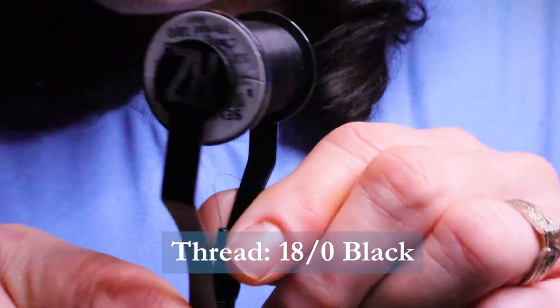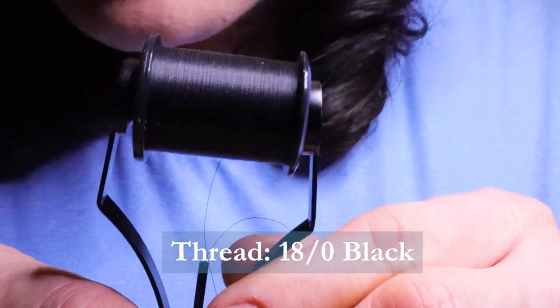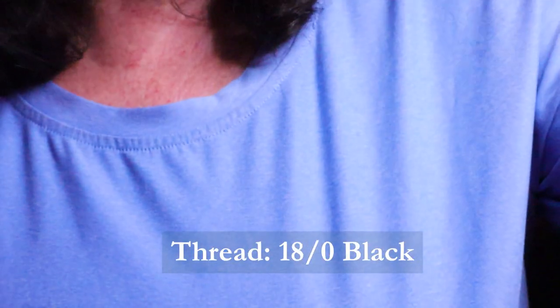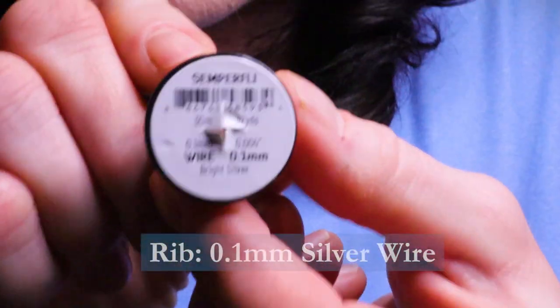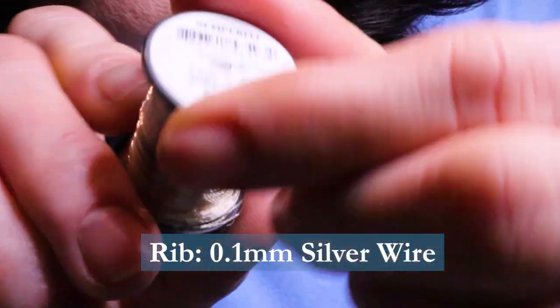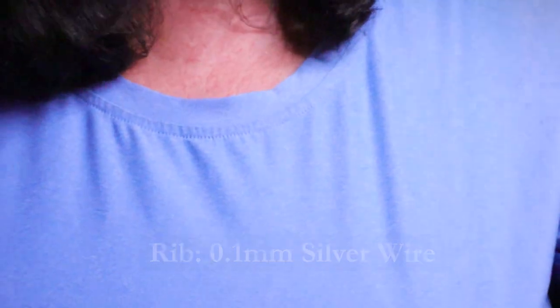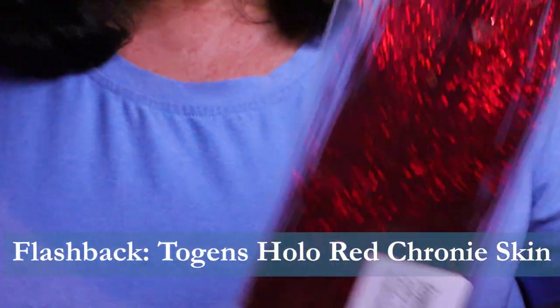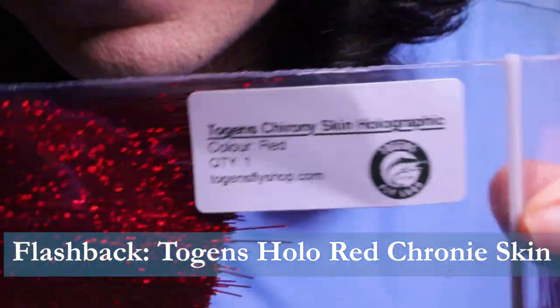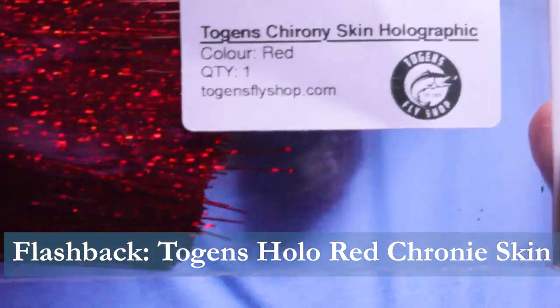For thread I'm using 18-knot Semperfly Classic Waxed in black. For the rib I'm using 0.1 mm silver wire. For the flashback I'm using Togan's Crony Skin in red.